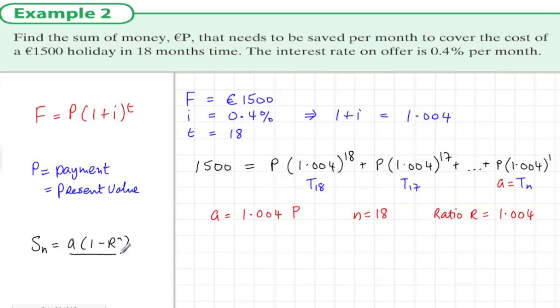Because that's the type of series we have here. We know that the total F, the future value, is the sum of 18 of this series.